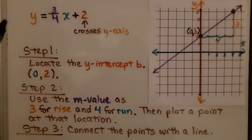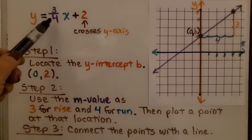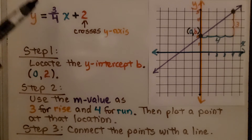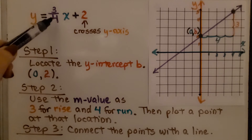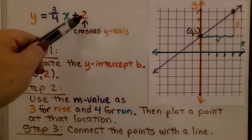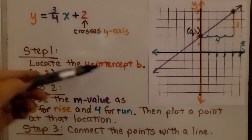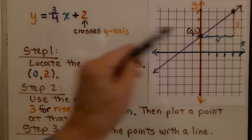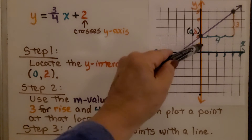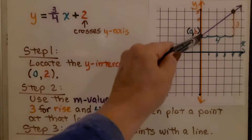Here we have an equation in slope-intercept form. We can see that the slope is 3/4, which means we have a 3 for a rise and a 4 for a run, and we know that it crosses the y-axis at 2. The first step is we locate that y-intercept b on the y-axis. So 2 is right here — 1, 2 — and we draw a point right there on the y-axis at 2.